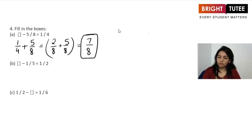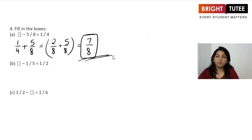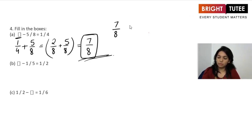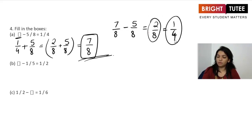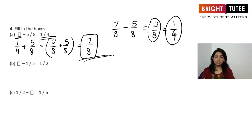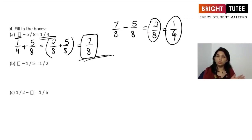The missing fraction is 7/8. Let's verify: 7/8 take away 5/8 gives 2/8, and simplifying 2/8 gives 1/4 — which is what we have on the right-hand side. Verified! So when the bigger fraction is unknown, we add the two given smaller numbers to find it. We use the inverse relationship between addition and subtraction.